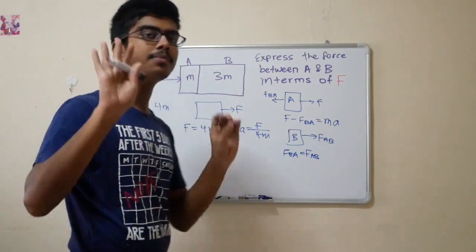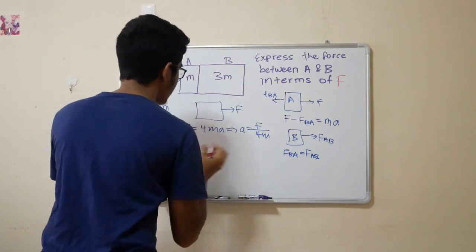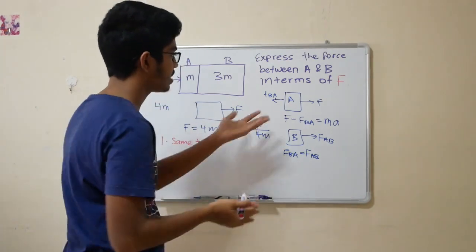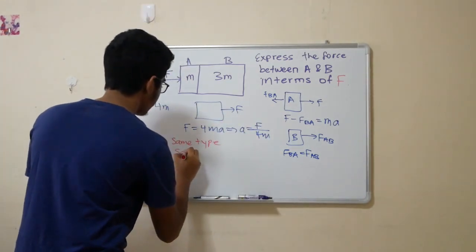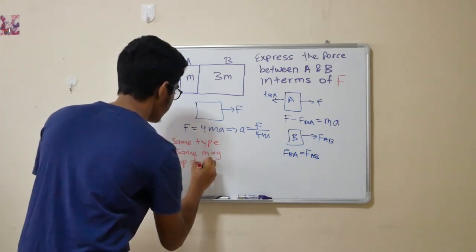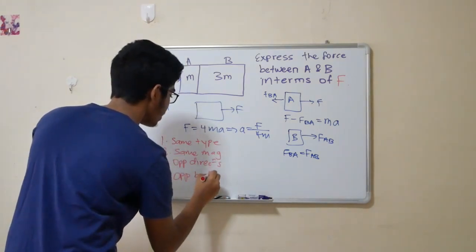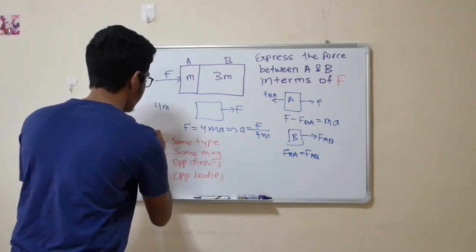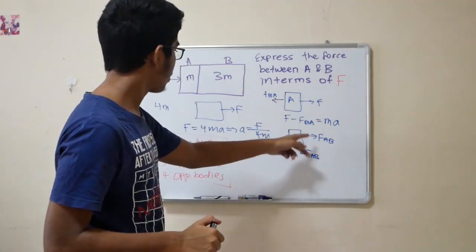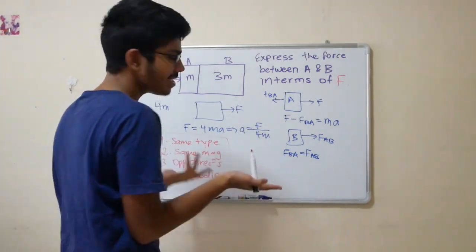For action-reaction pair of forces, there are four conditions that we must remember and we must state when a question comes out in the Cambridge exam. Number 1, they must be of the same type. In this case, they're just contact forces. Number 2, same magnitude. Number 3, opposite directions. Number 4, opposite bodies. These are very important. Cambridge will love to test these four conditions.